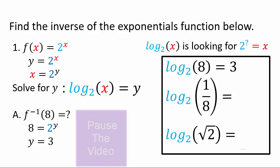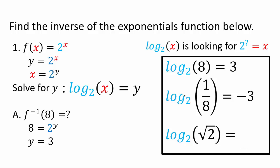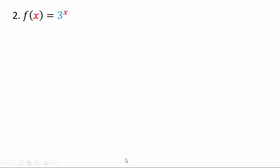Assuming you've come back: log base 2 of one-eighth is negative 3, because 2 to the power negative 3 gives you 1 over 8. For square root of 2 — square root is radical notation, which is an exponent of one-half — so 2 to the power one-half is square root 2, giving log base 2 of square root 2 equals one-half.